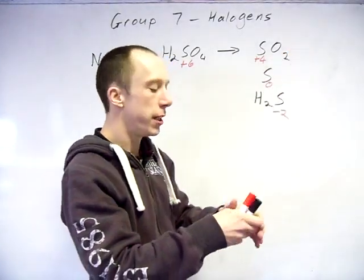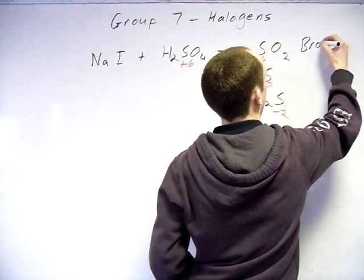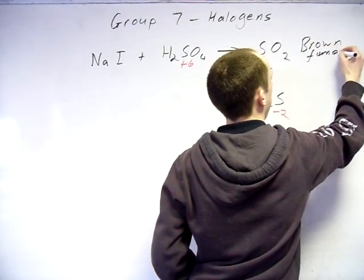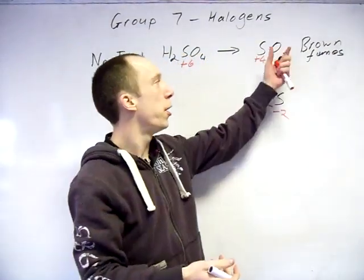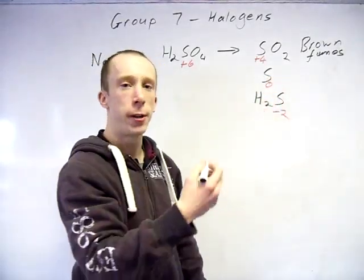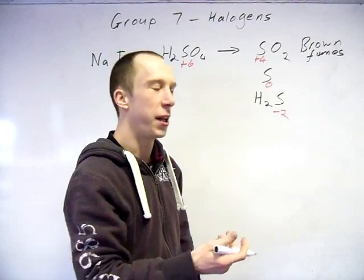In terms of spotting this, so as you just saw with the sodium bromide one, sulfur dioxide - brown fumes has given off. Sulfur is a solid, it's very dark purple, mainly just looks black to the eye.